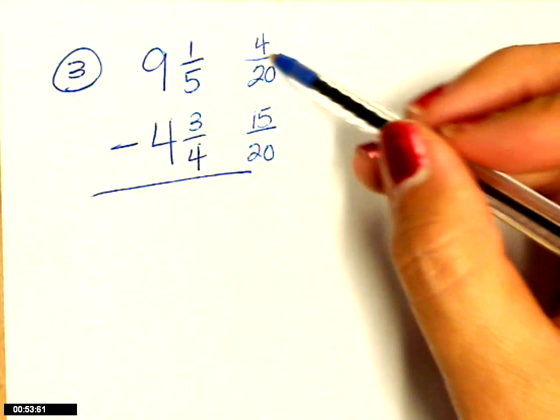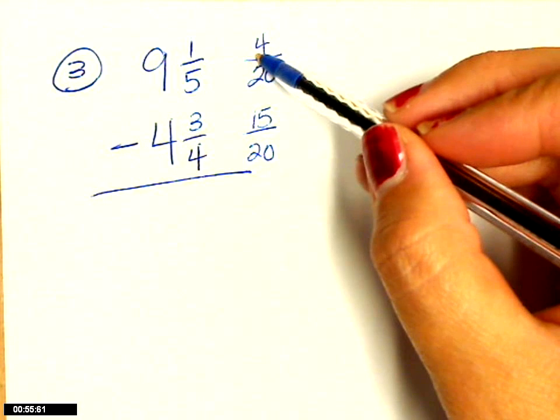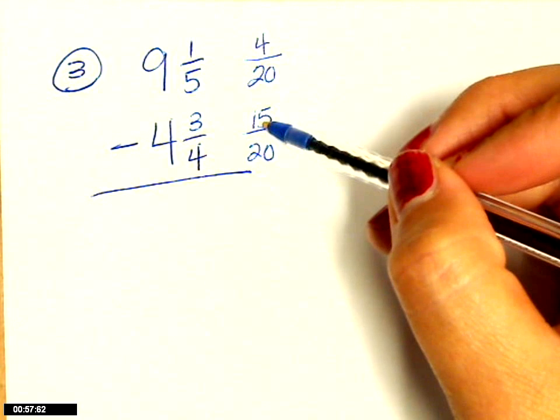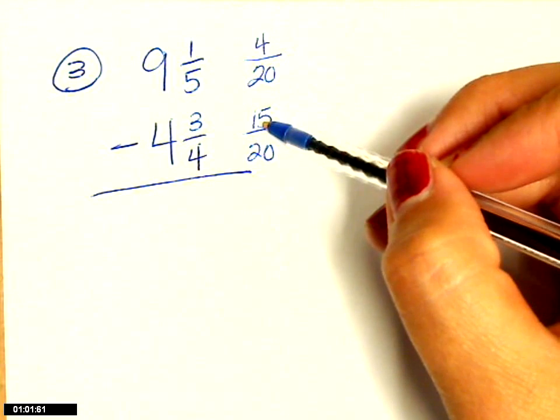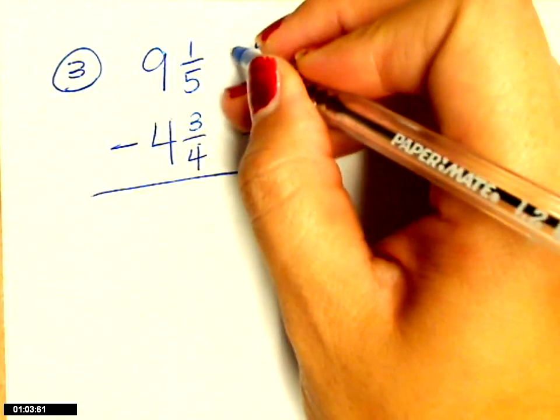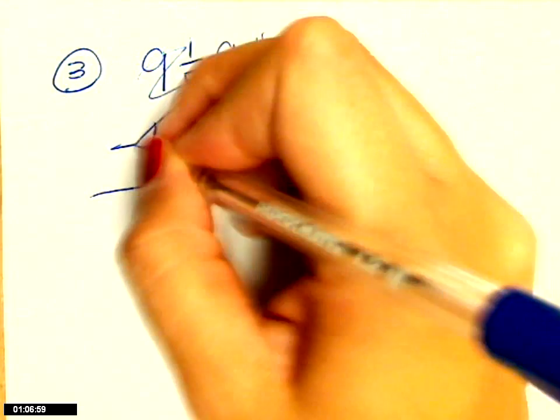The problem I've run into is that this four isn't big enough to take fifteen away. So I've got to change it into an improper fraction, which means I'm going to do the Texas thing. These are gone now, okay?